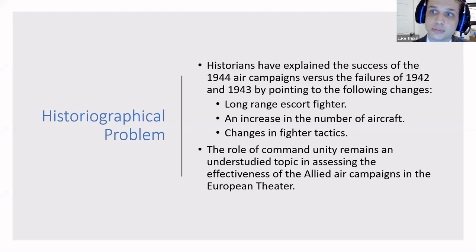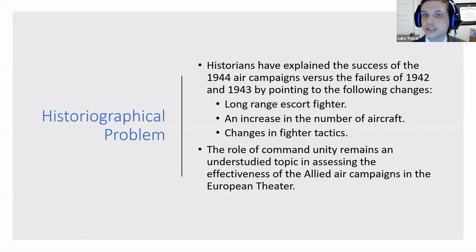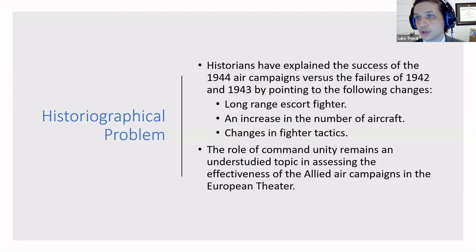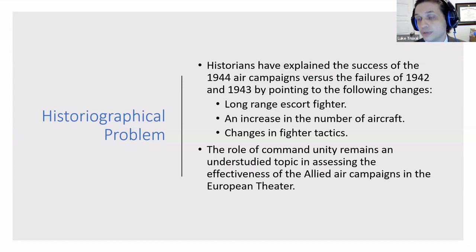The historiographical problem is that much of what we see about the air war boils the difference between 1943 and 1944 down into three arguments. The one that gets the most attention is the long-range escort fighter. The lack of a long-range escort fighter is a real problem in 1943 — you cannot escort your bombers all the way to the target without coming under attack by German fighters. The P-51 Mustang gets introduced at the end of 1943 and really makes its presence known in 1944.